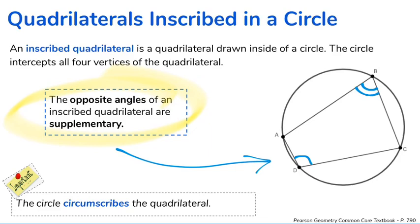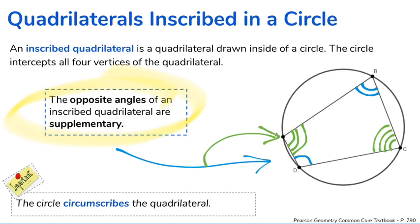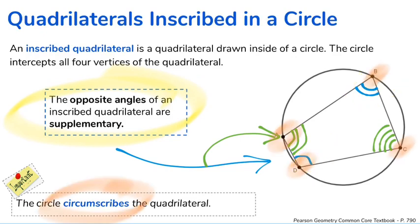If you just have a normal quadrilateral drawn, it's not always true that the opposite angles are going to be supplementary. But when you have a quadrilateral that is inside of a circle, the opposite angles will always be supplementary, meaning they add up to 180 degrees. The same would be true for the other two angles. All four angles could be different — that's why you're seeing the single, double, triple, and quadruple angle markers.